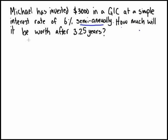Hello everyone, this is a practice problem we'll go through with simple interest. The question is: Michael has invested $3,000 in a GIC at a simple interest rate of 6% semi-annually, so interest is paid out every half year. How much will it be worth after 3.25 years? This is asking for the future worth, so it's a future worth problem and we need to use the formula for that.